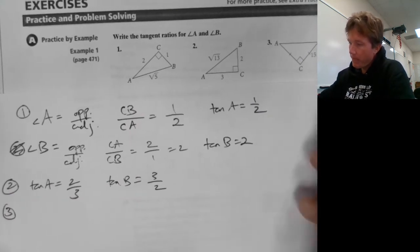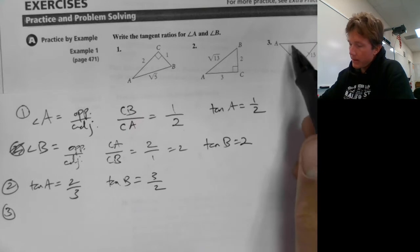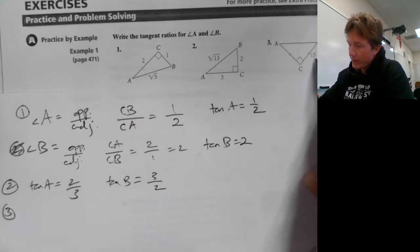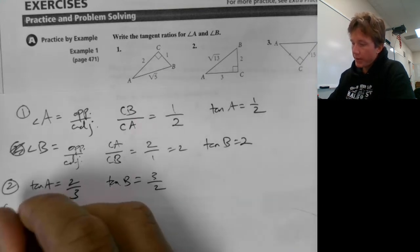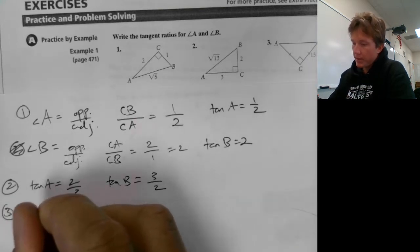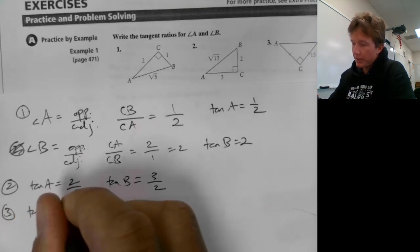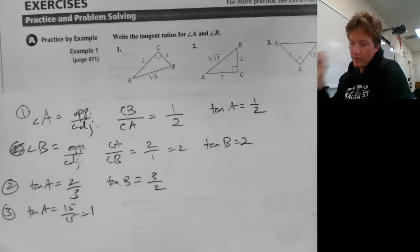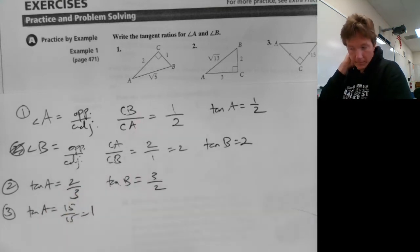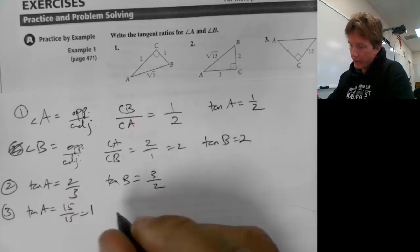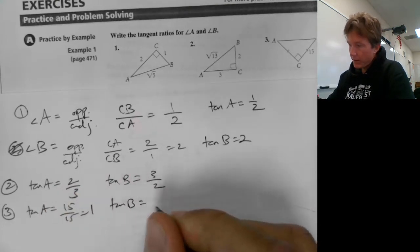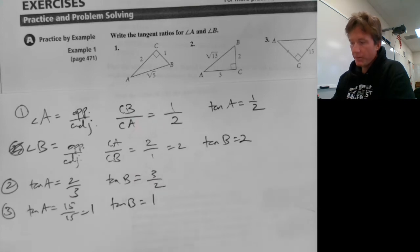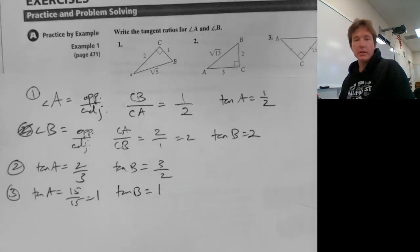Number three: angle A is over here. The opposite side is 15. The adjacent side is also 15 because it's isosceles. So that means tangent of A is one. And then tangent of B — same thing. The reciprocal of one is one.